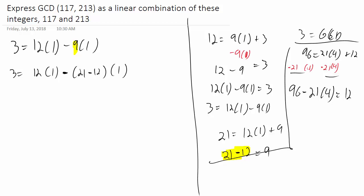96 minus 21 times 4 is equal to 12. Since 12 is that, I'm going to replace the 12 with that. So still bring the 3 down, 3 equals, this is going to be 96 minus 21 times 4. And then everything else I'm going to copy down normally.